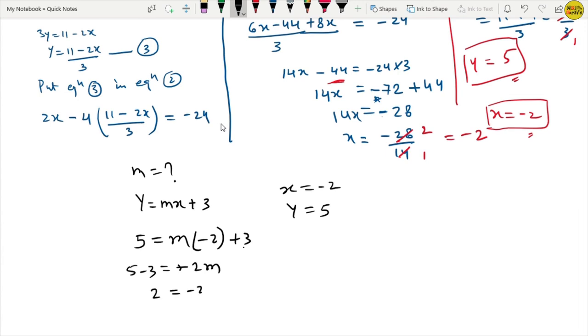So this is how much value. 2 equals to minus 2M. So M equals to 2 upon minus 2, that means that is minus 1. So M value is minus 1. This is your answer of question number 2.